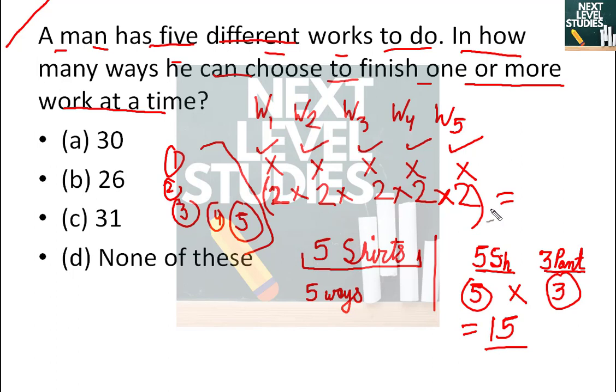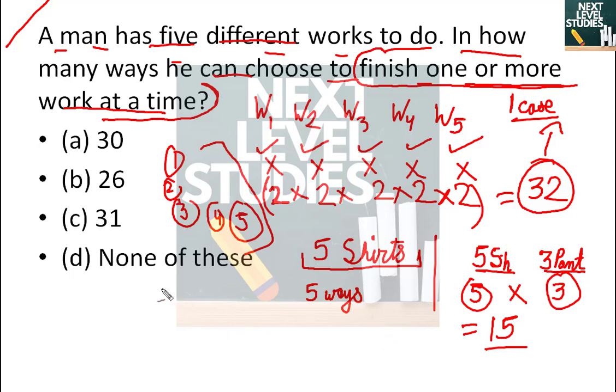So same thing here: 2 into 2 into 2 into 2 into 2 equals 32 ways. These are all the cases, including when you do no work. But the question says one or more work at a time. So we consider 32 minus 1, which gives us 31 as the answer. 31 ways in which we can choose from 5 works differently.